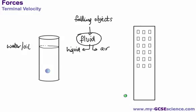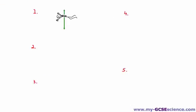Objects falling through fluids is actually specifically stated in the specification. What we're looking at is the types of forces that act on these objects and what effect the forces have on the movement of a falling object. The classic example given is the parachutist — they do mention parachutists in the specification — so let's look at how it works. There are different stages of the journey, numbered one to five, and at the very first stage we have the parachutist who has just jumped from the plane.